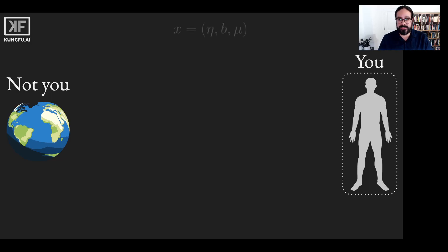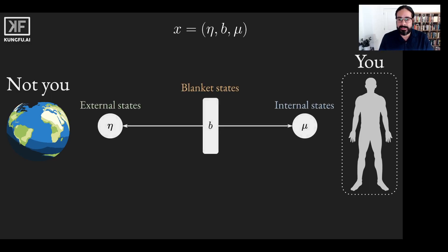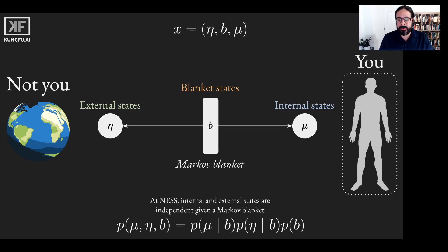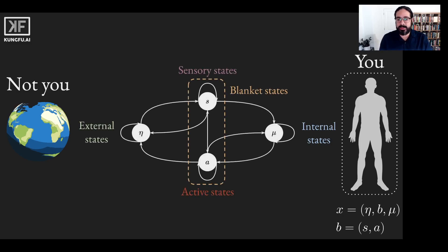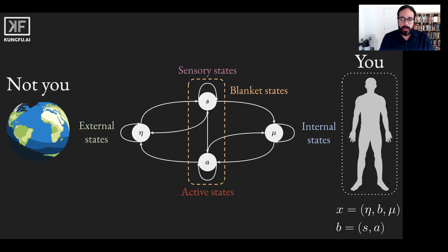We will partition the universe into three different sets of states: external states eta, blanket states b, and internal states mu. The blanket state, technically known as a Markov blanket, is responsible for the statistical partition of the internal states of a living organism from the external states of its environment. When conditioned on the Markov blanket, internal states and external states become separate dynamical systems that can interact through the blanket. The two systems thus change independently over time, and the living system remains at non-equilibrium steady state. Functioning as a kind of interface, the Markov blanket can itself be decomposed into sensory states, which give it a peek into the external environment, and action states, which allow it to act on and change the external environment. So long as the living system maintains this boundary, it remains separate and distinct from its surroundings, and is thus alive and exists.